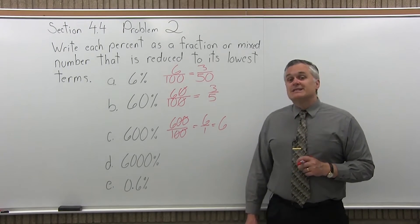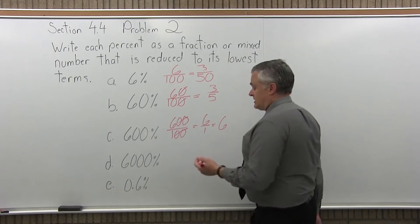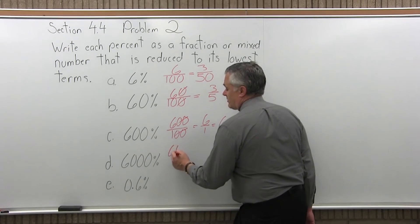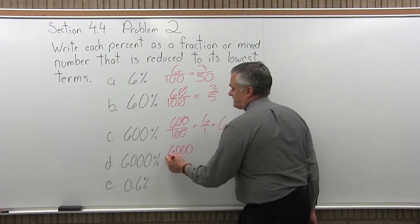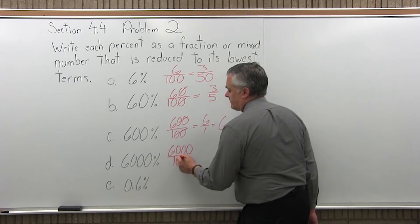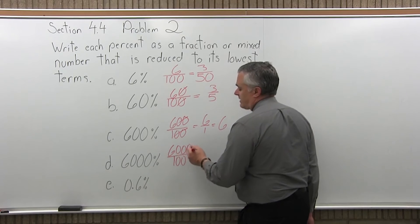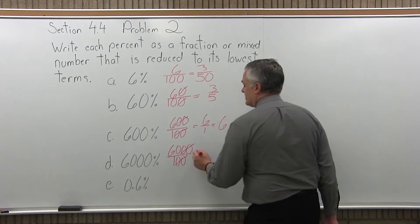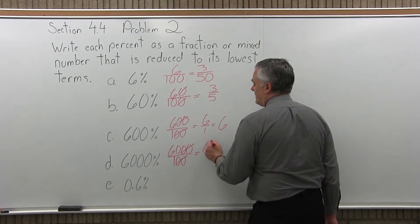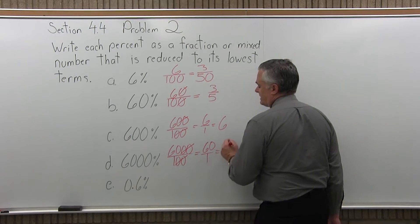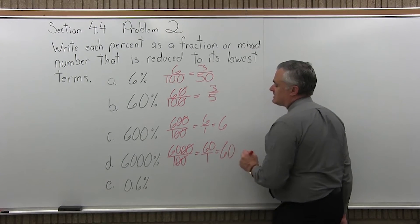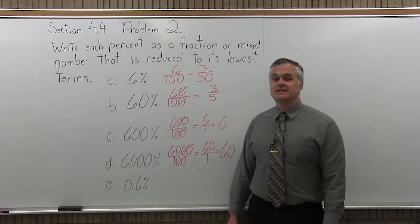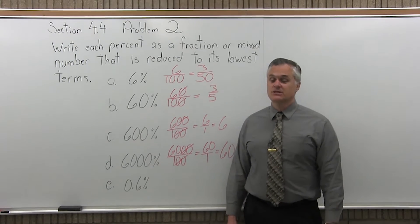And the next one is 6,000%. So like the others, write the percent over 100 to do the conversion. So I'll have 6,000 over 100. And I can start the reduction. Two zeros on the top will cancel two zeros on the bottom. Which leaves me with 60 over 1. And again, the over 1 doesn't really need to be written. We can just say that's 60. So as a fraction, 6,000% is written as just 60.